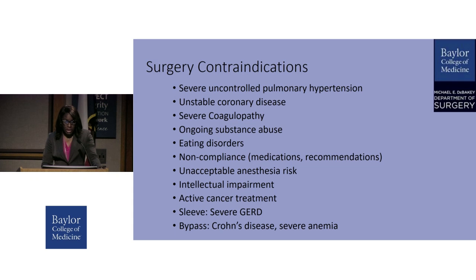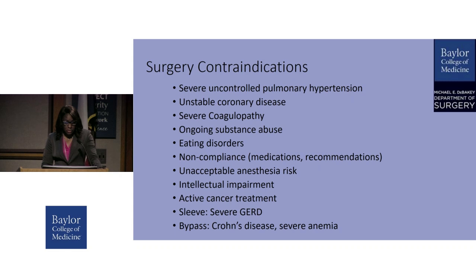In terms of the contraindications, there are very few absolute contraindications to surgery. A lot of these are relative, and we try to optimize and risk-stratify our patients prior to surgery in order to make them appropriate surgical candidates. Among some of the contraindications that we encounter are severe uncontrolled pulmonary hypertension, unstable coronary disease, severe coagulopathy, ongoing substance abuse, eating disorders, and noncompliance with medications or recommendations from other physicians.